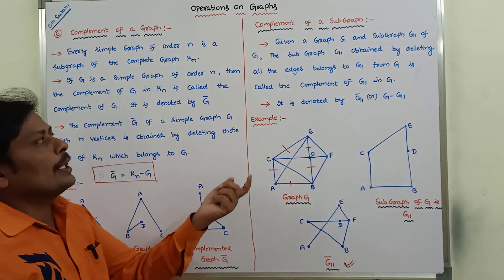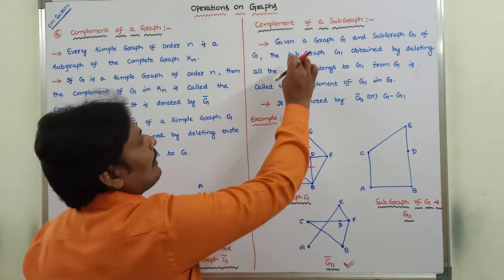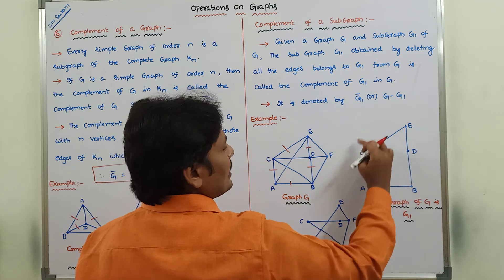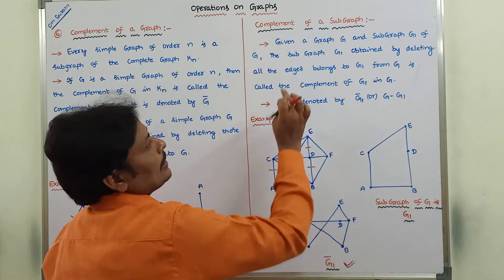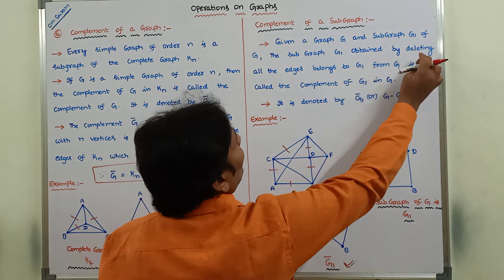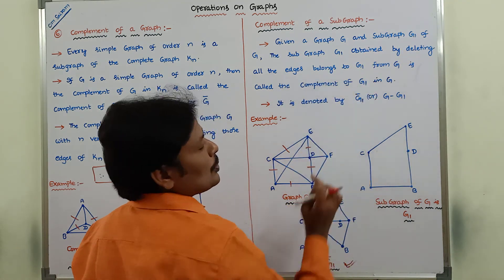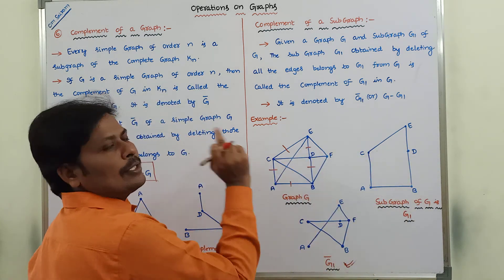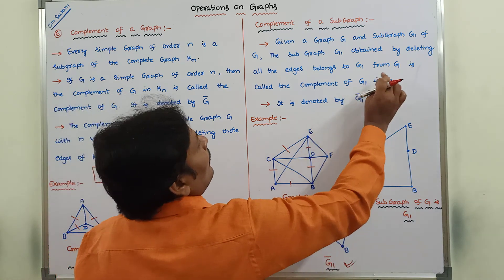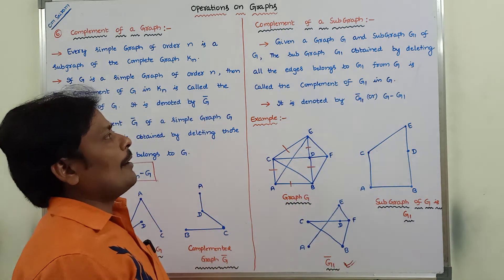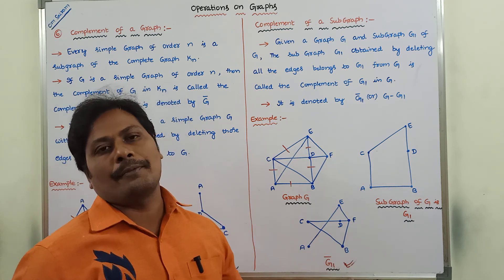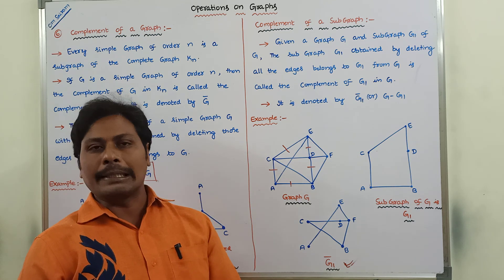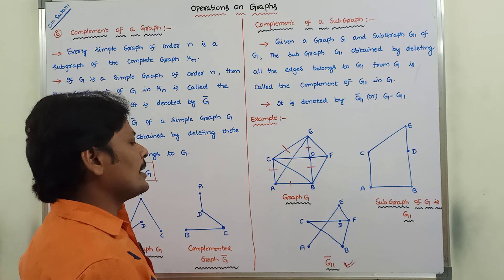The definition: given a graph G and subgraph G1 of G, the subgraph obtained by deleting all the edges belonging to G1 in G is called the complement of G1. These are the six operations performed on graphs. Thank you for watching this video.